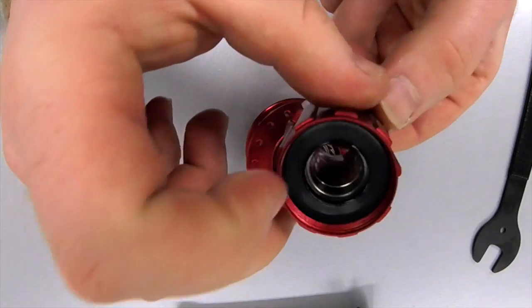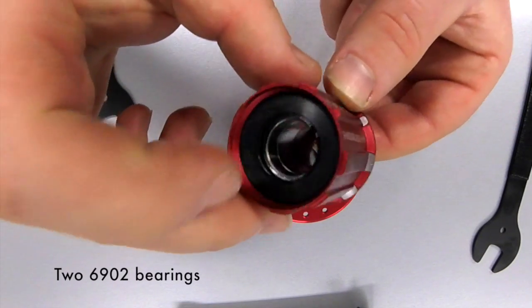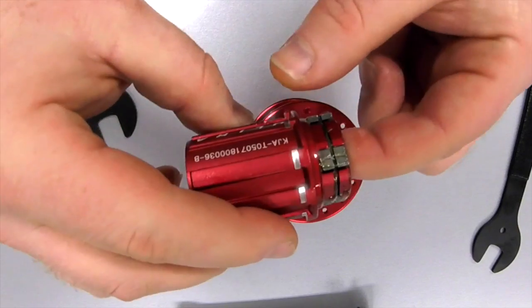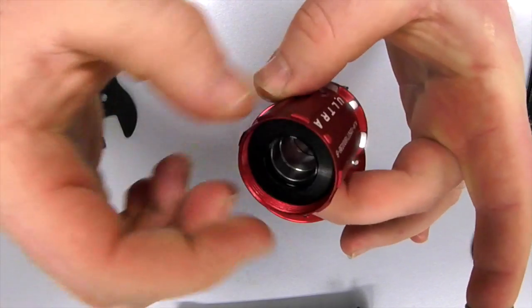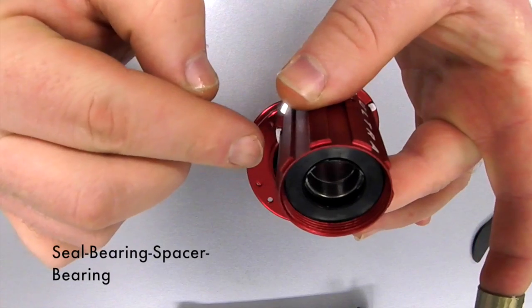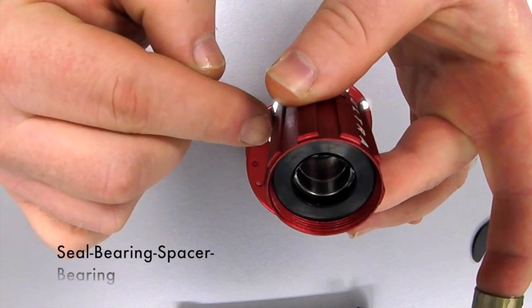Inside you'll have two 6902 bearings which are made by SKF. They're very easy to replace. All you do is take the spacer out, push out the bearing from this side and you'll have a seal, a bearing, a spacer and another bearing in the back.